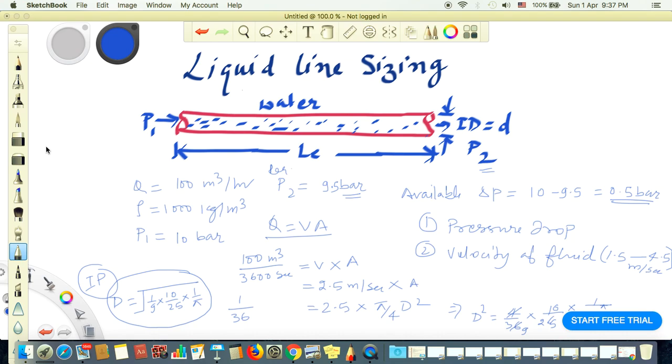Using this ID, we'll use the Darcy formula to calculate the pressure drop: rho F L V square upon 2D. We know rho is 1000, we know L which is equivalent length, and the velocity and diameter we calculated. The velocity we used is 2.5 meter per second.